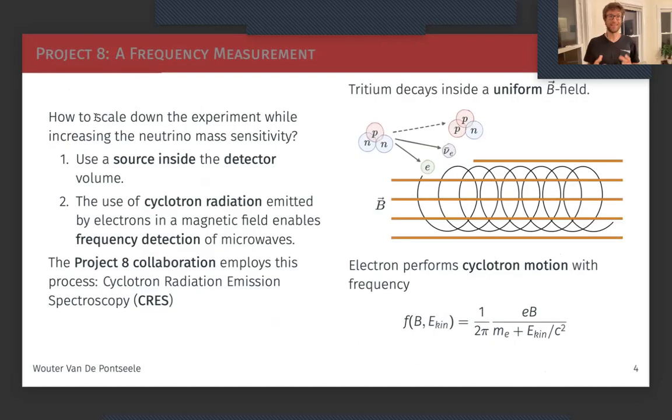Project 8, the collaboration that I am a member of, tries to do this measurement in a different way while keeping the size fairly small and increasing the sensitivity. One point is to use the source inside the detector, so use tritium gas and atomic tritium inside your detector volume. The second is to catch this electron in a magnetic field.